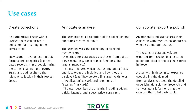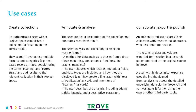In create collections, an authenticated user establishes a collection for pearling in the Torres Strait in their project space. They search Trove across multiple formats and categories — for example, text-based records, maps and people — using the terms 'pearling' and 'Torres Strait' and add the results to their collection. In annotate and analyze, the user creates a description of the collection and annotates records within it. They can also analyze the collection or selected records. A method for data analysis is chosen from a dropdown menu, such as a concordance function, a line graph, or a map. The user chooses which records, data fields and data types are included and how they're displayed — for example, a line graph with year of publication as the x-axis and mentions of pearling as the y-axis. The user then describes the analysis, including adding a title, legends and a descriptive paragraph.